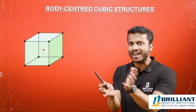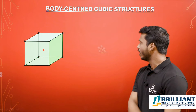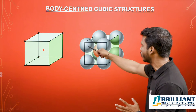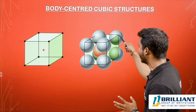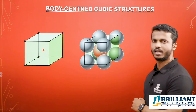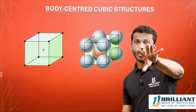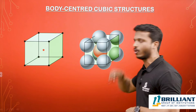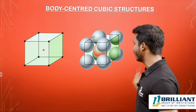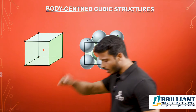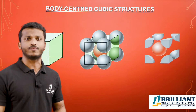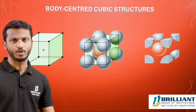Let's look at the three dimensional structure. You can see corners 1, 2, 3, 4, 5, 6, 7, and 8 — those are the corner spheres — and at the center the red one is the center sphere. Now, what is the number of spheres in the unit cell?